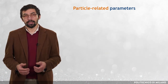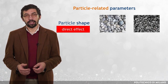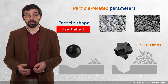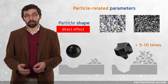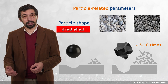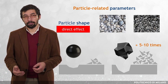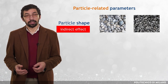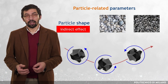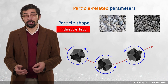Two other particle-related parameters are particle shape and particle material. The direct effect of particle shape on erosion was found significant by many experimenters, who observed that the erosion potential of an angular particle could be as much as five to ten times higher than that of spherical particles with the same material and size. In addition, the indirect effect has to be considered, since the shape of the travelling particle affects its trajectory through, for instance, a change in the drag coefficient or an induced spin.